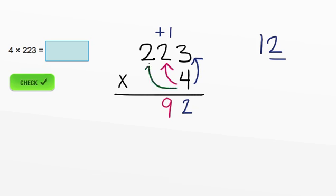Now we can finish up the problem by multiplying our number in the hundreds place. So we want to know what 4 times 2 is. Well, 4 times 2 is 8 and we bring the 8 right underneath the 2 in the hundreds place. So this tells us that 4 times 223 is 892.